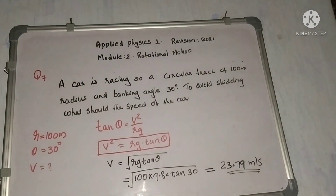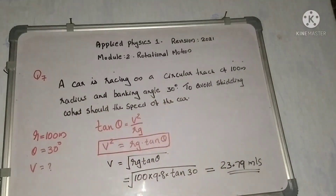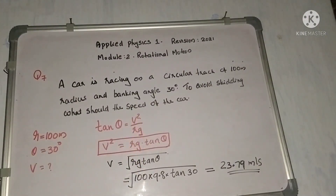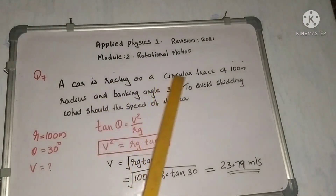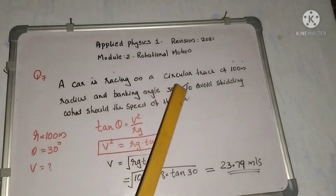Next problem: a car is racing on a circular track of 100 m radius with a banking angle of 30 degrees to avoid skidding. What should be the speed of the car? The radius is 100 m and the angle of banking is 30 degrees.